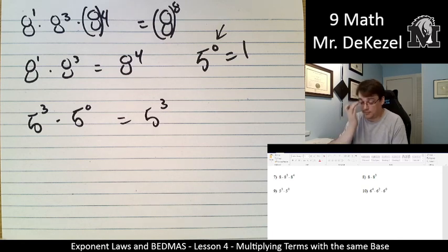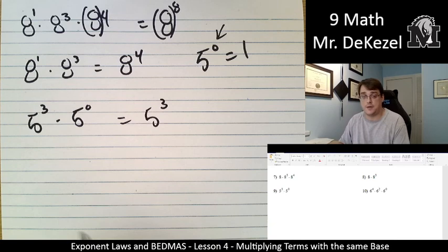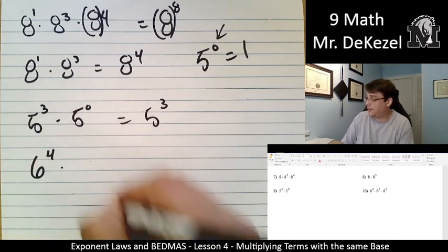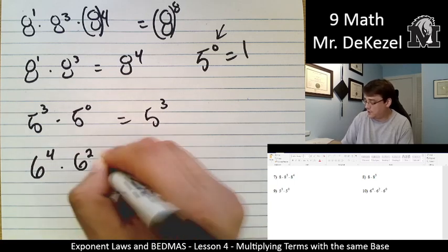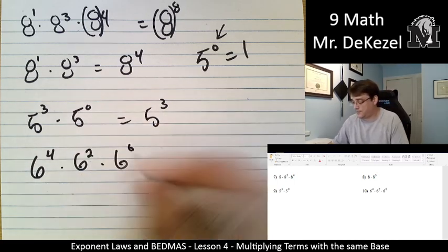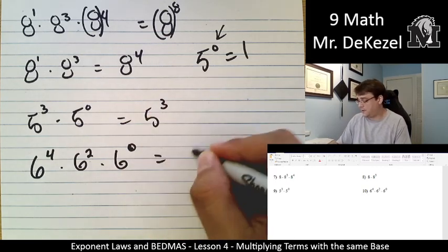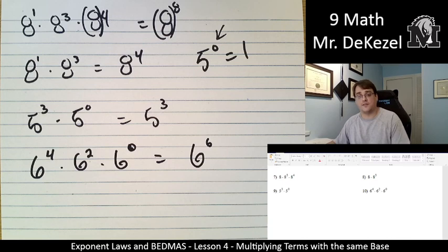So 5 to the power of 3 makes a lot of sense. And our last one that we're going to do, 6 to the power of 4 multiplied by 6 to the power of 2 multiplied by 6 to the power of 0. Again, we're adding the exponents, so 4 plus 2 plus 0, that's 6 to the power of 6.